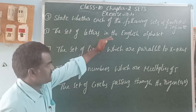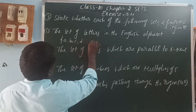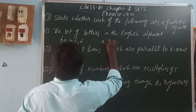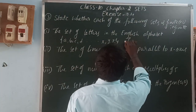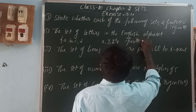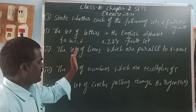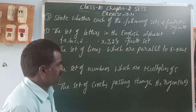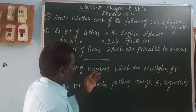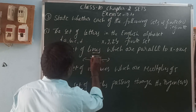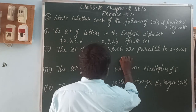State whether each of the following sets is finite or infinite. The set of letters in the English alphabet — A, B, C, D, and so on up to X, Y, Z. Next: the set of parallel lines — that means uncountable lines, so this is an infinite set.